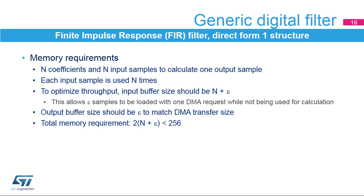The FIR requires N coefficients and N input samples to calculate one output sample. To optimize throughput, the input buffer size should be larger than N in order to load the next samples while the filter is working on the current set. For example, when using 4-beat DMA transfers, epsilon should be set to 4. Also, the size of the output buffer should be set to epsilon to transfer resulting samples in a unique AHB burst transaction.